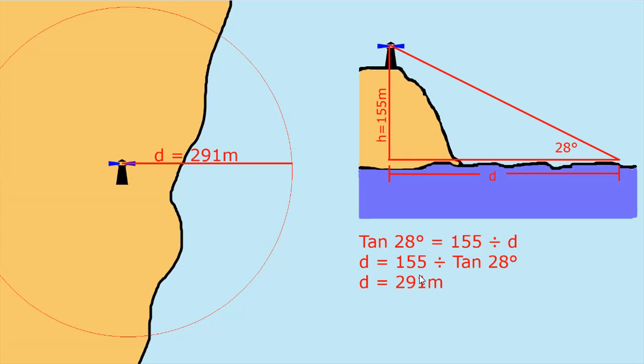If you do your mathematics and spin that around, the distance out from this lighthouse is 155 which is the height divided by the tangent of that angle 28. In this case it gives you a distance of 291 meters. So distance equals 291 and on your chart you can draw a distance of 291 meters.